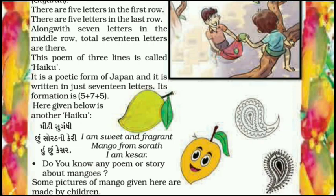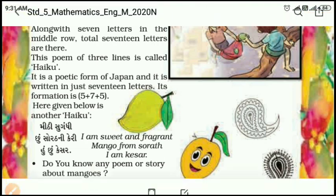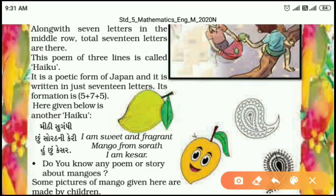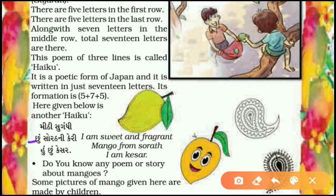Here is another Haiku. See whether the formation is right or not. In the first line there must be five letters — Mithi, Sugandi, Chhu, Soratni, Keri, Muchhu, Kesar — total five letters. In the second line, total seven letters. In the last line, five letters. So this is another Haiku: Mithi Sugandi — I am sweet and fragrant; Chhu Soratni Keri — Mango from Sorat; Muchhu Kesar — I am Kesar.